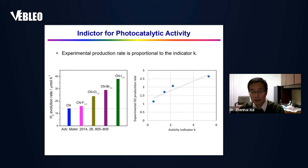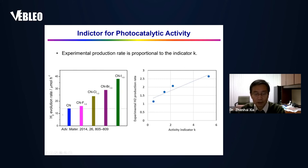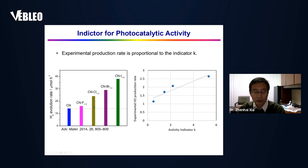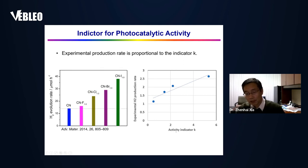We examined our indicator calculated from DFT against experimental results. The experimental result is the hydrogen evolution rate when doped with different dopants — different halogens give different hydrogen evolution rates. We calculate the activity indicator for each dopant and find that the experimental hydrogen production rate is proportional to the activity indicator, validating that this activity indicator is useful.